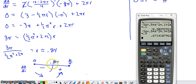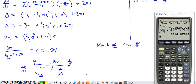That does tell us that our minimum area occurs when r is .84. So the minimum area is going to happen when r is about .84.